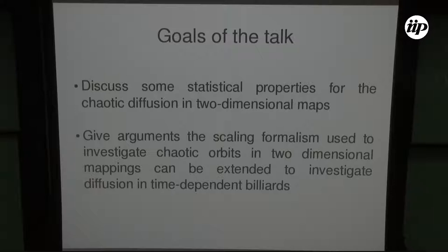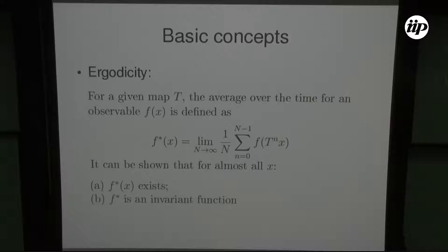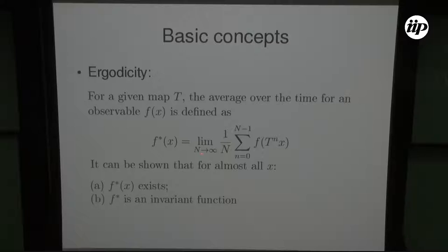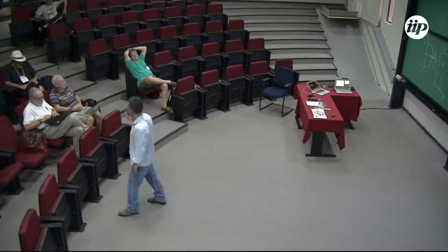Those who attended Felix's talk saw a nice definition of ergodicity. I will rephrase some of those concepts. Assume we have a dynamic described by a mapping T. For a given mapping T, the time average of an observable f(x) is defined as f*(x), the limit as N goes to infinity of (1/N) times the summation from n=0 to N-1 of successive applications of the map to x. It can be shown that f*(x) exists and that f* is an invariant function — this is part of the definition of ergodicity.